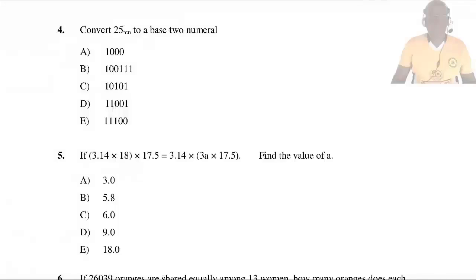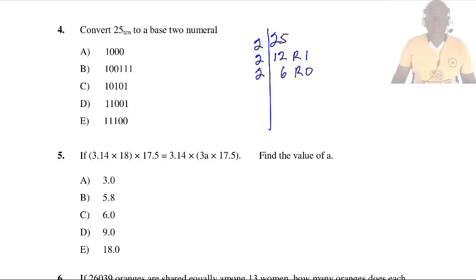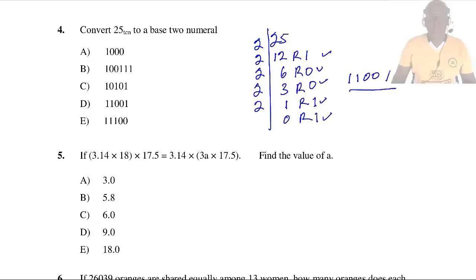Question 4: Convert 25 to base 2. Dividing repeatedly by 2, we get 1 remainder 1, so the answer is 11001001 in binary, which is D.